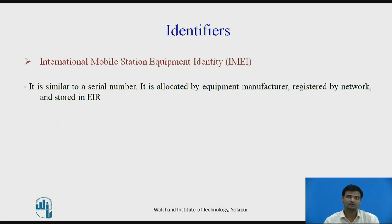The next identifier is the IMEI Number — International Mobile Station Equipment Identity. The IMEI looks more like a serial number which distinctively identifies a mobile station internationally. It is allocated by the equipment manufacturer and registered by the network operator, who stores it in the equipment register. By means of IMEI, one can recognize stolen or non-functional equipment.